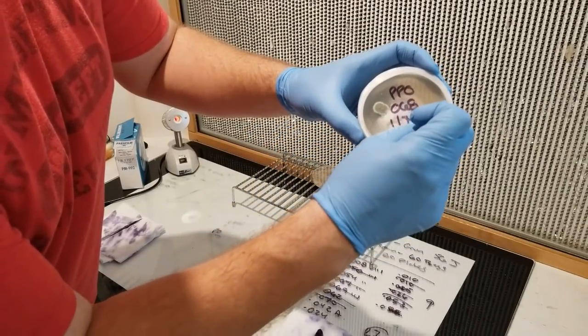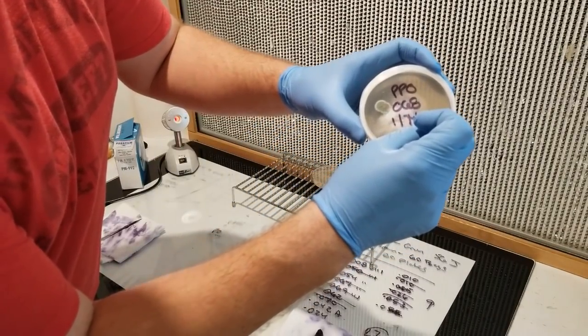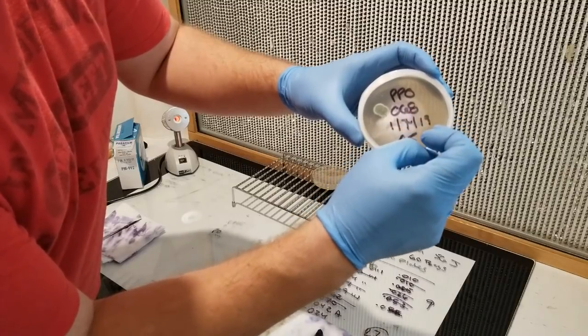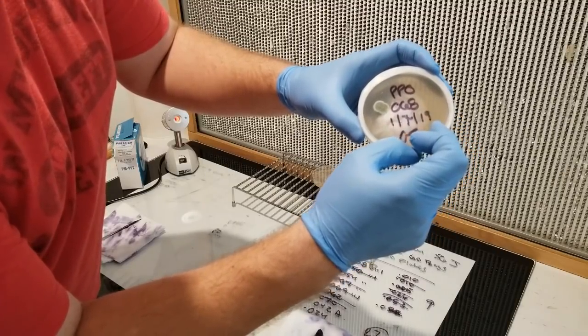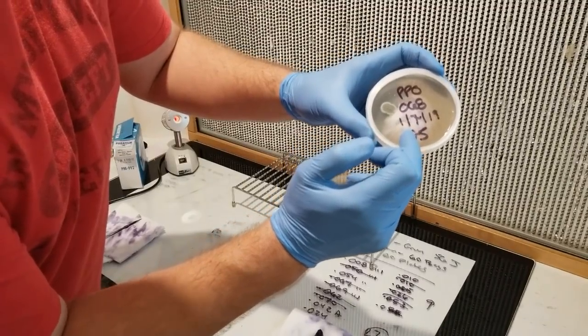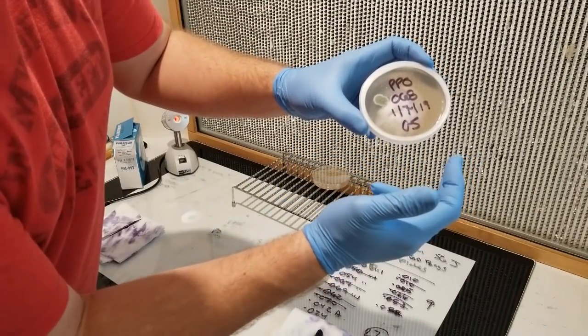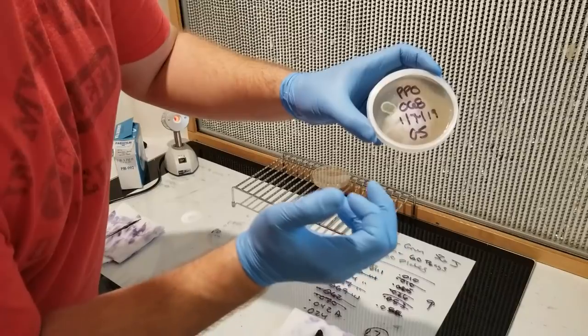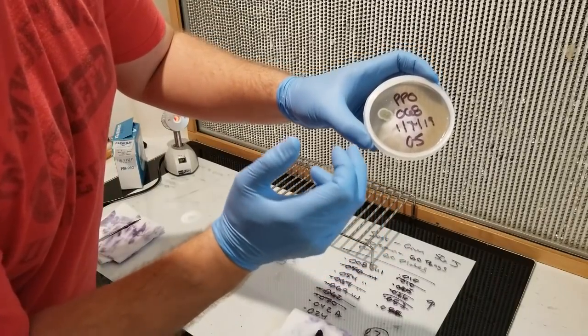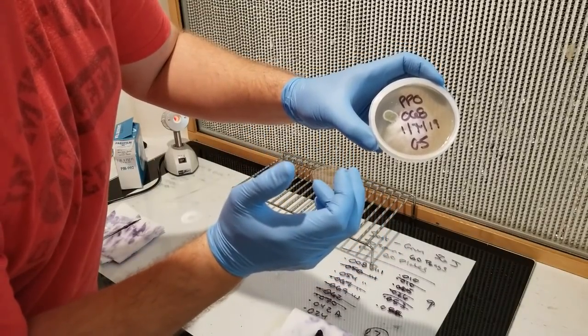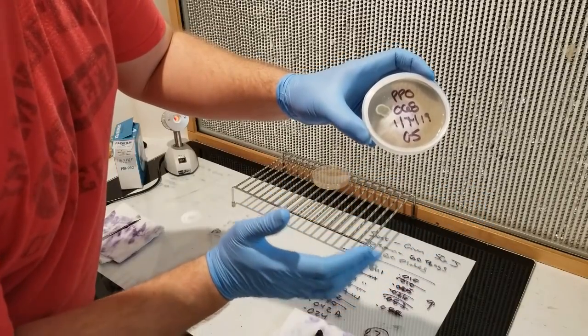All we're going to do is take a little bit of the Pleurotus populinus culture just on the opposite side. We're going to try to open it so that the mycelium is closest to the fresh air, and I'm going to be careful on how I open the plate. Whenever you're dealing with contamination, you want to do that last. You want to go cleanest to dirtiest.